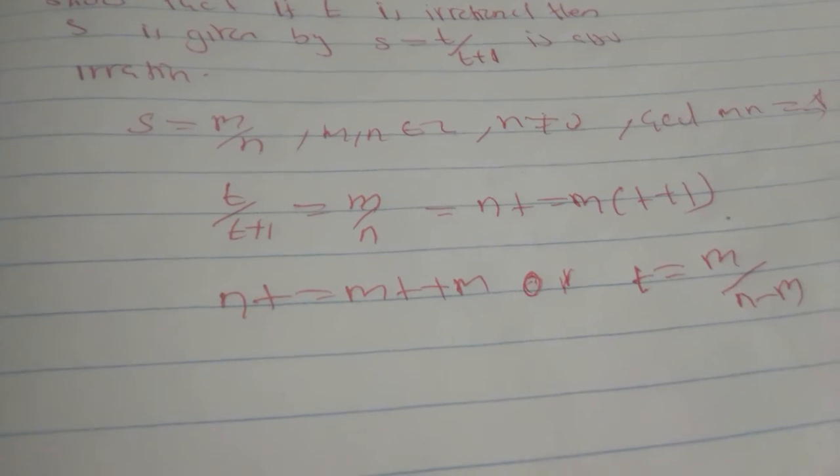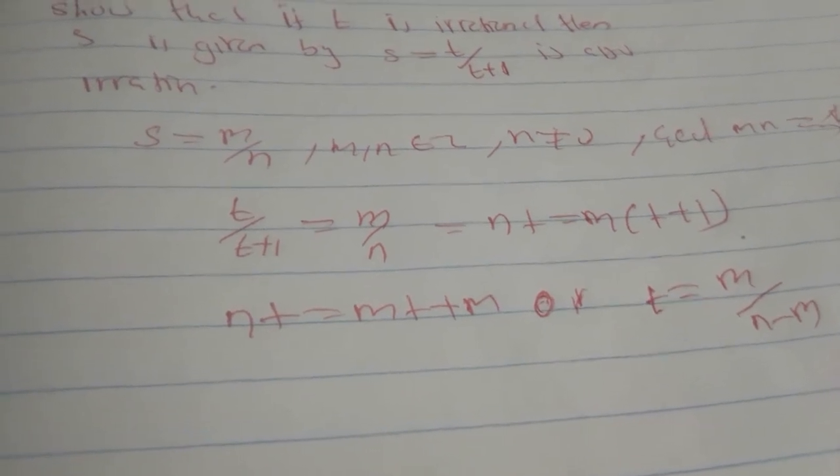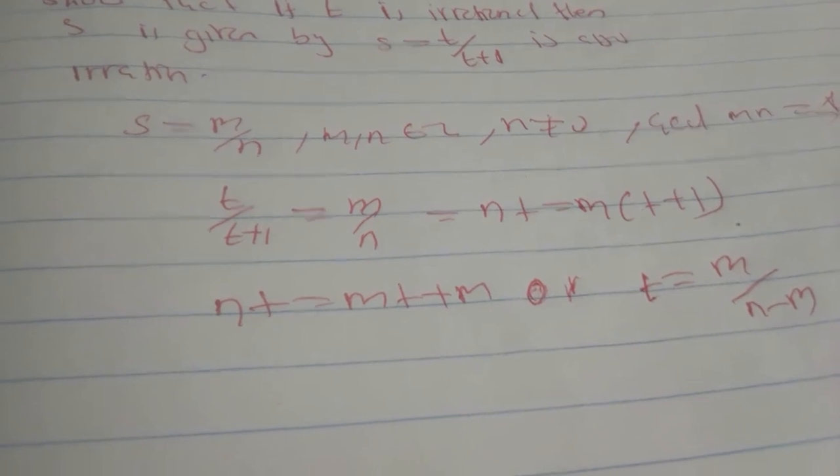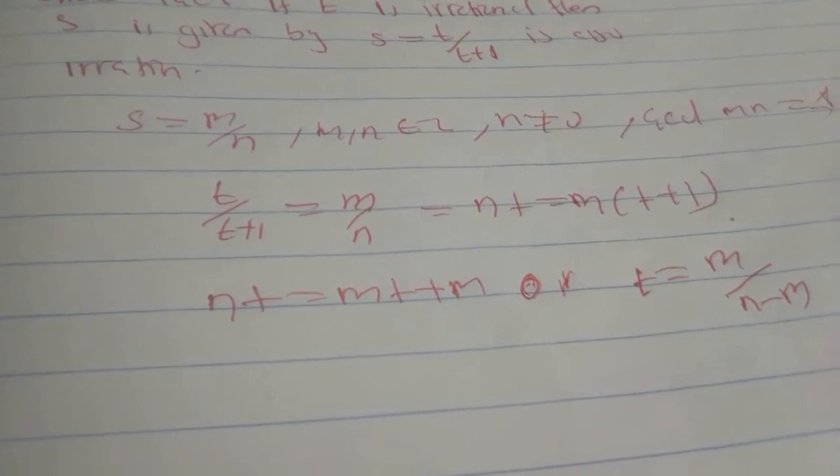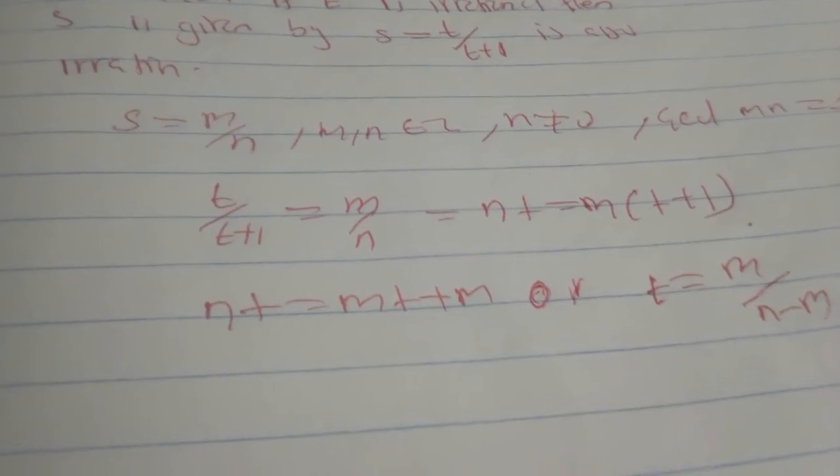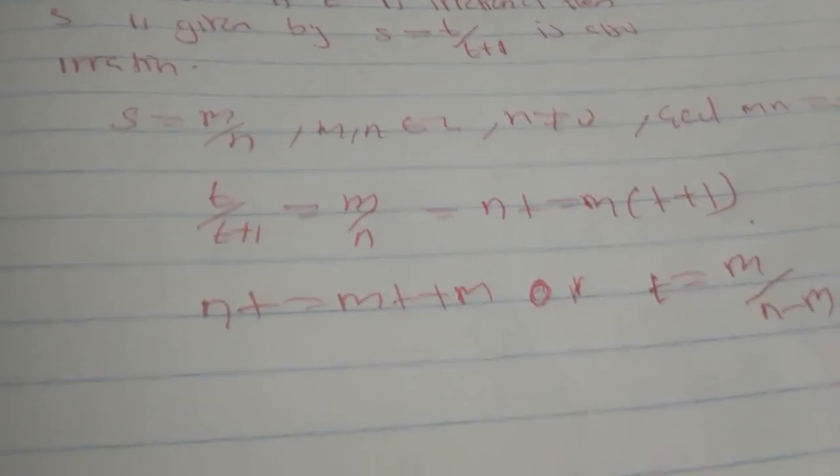This is a contradiction since t is known to be irrational. Since t is irrational, it follows that t over t plus one is irrational.